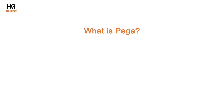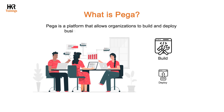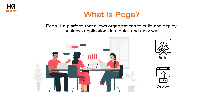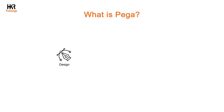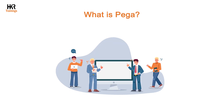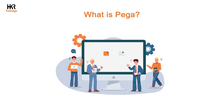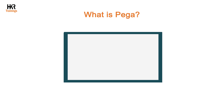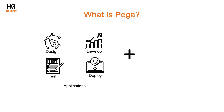Now let us understand what is Pega in detail. Pega is a platform that allows organizations to build and deploy business applications in a quick and easy way. It offers a complete suite of tools and technologies to design, develop, test, and deploy business applications. The primary objective of Pega is to automate business processes, simplify operations, and enhance customer engagement. It offers a unified platform for building applications that can be integrated with various systems and data sources.